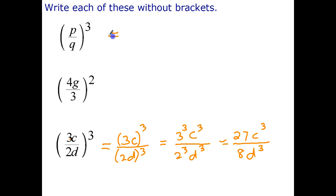First one hopefully you just wrote the answer down really quickly, that simplifies to p cubed over q cubed. With the second one we can get rid of the large brackets by saying that is 4g all to the power of 2 over 3 to the power of 2. Now 4g all to the power of 2 we can get rid of those brackets by saying that's 4 squared g squared over 9 since 3 squared is 9, and finally 4 squared is 16 g squared all over 9.